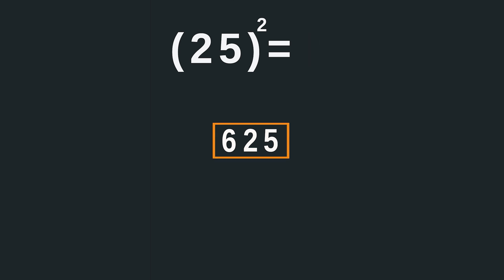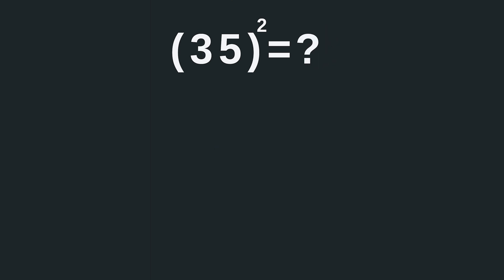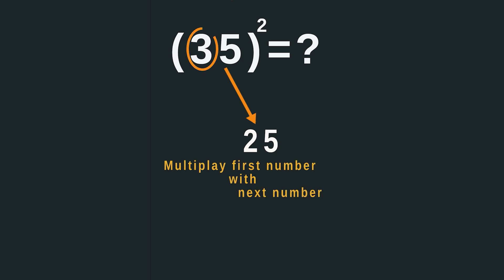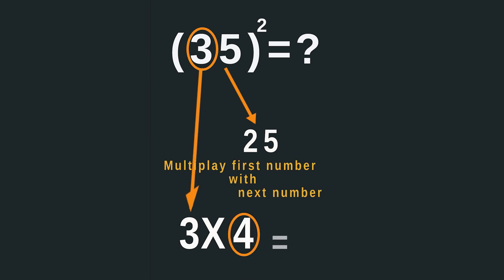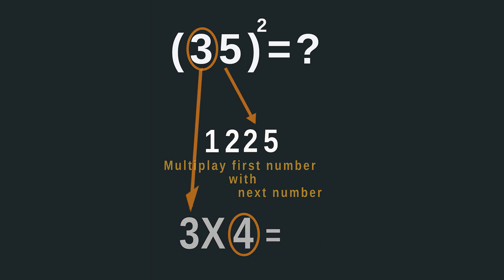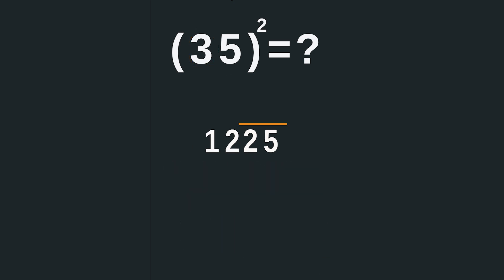Now let's find the value of 35 squared. Square the last digit, which gives you 25. Then multiply 3 with its next digit, that is 4. Evaluate 3 times 4, which gives you 12. Piece the results together to get the square of 35, which is 1225.